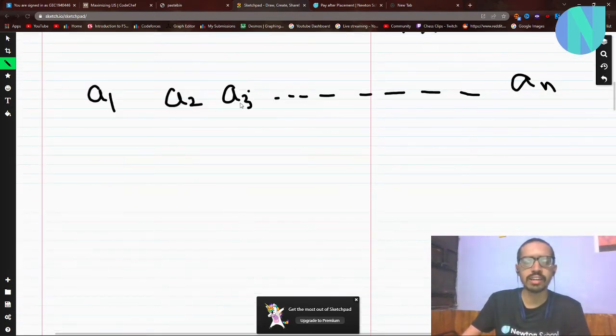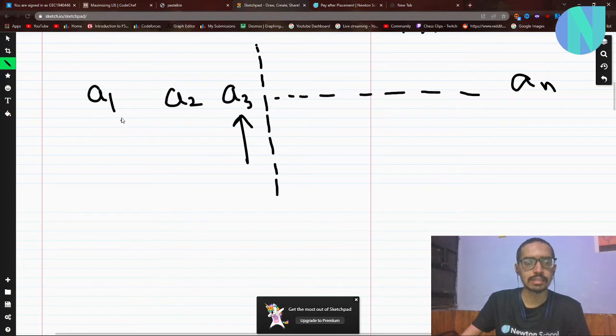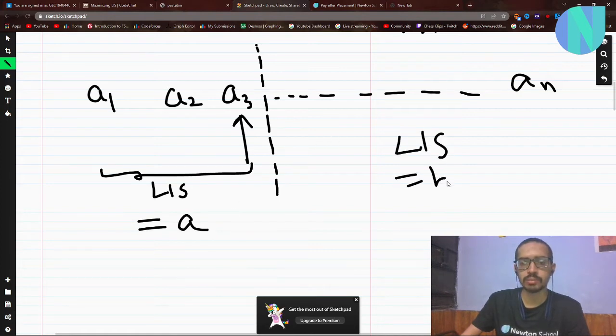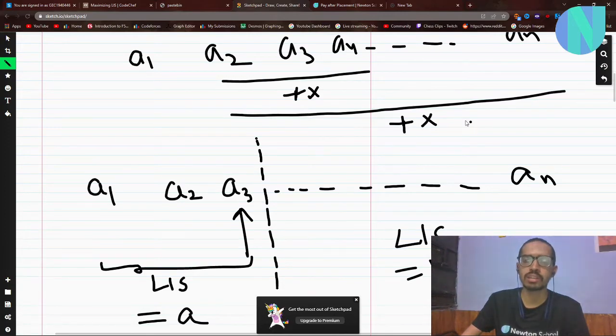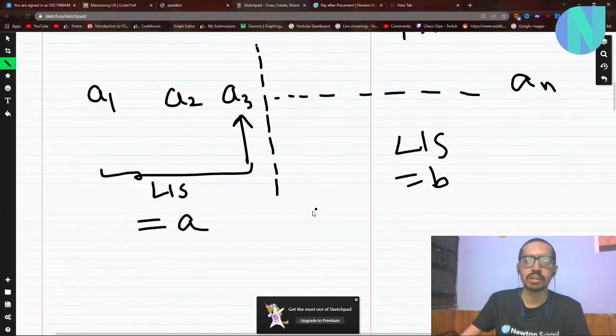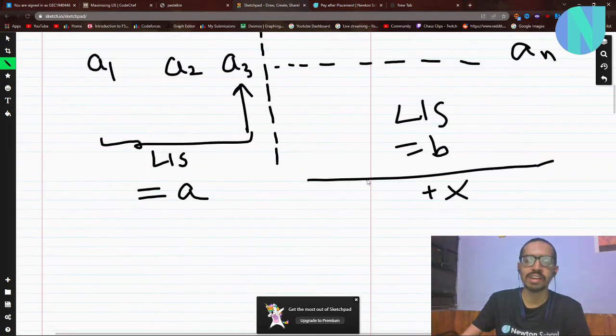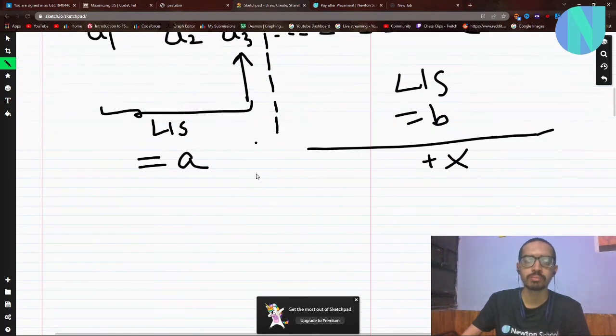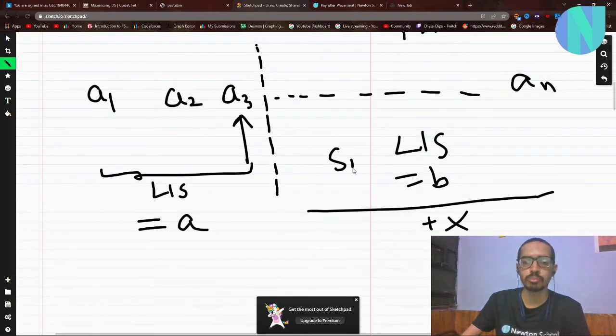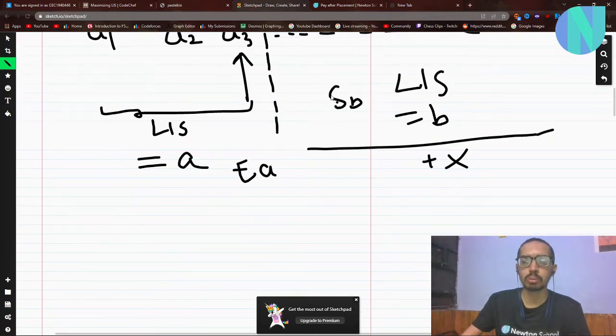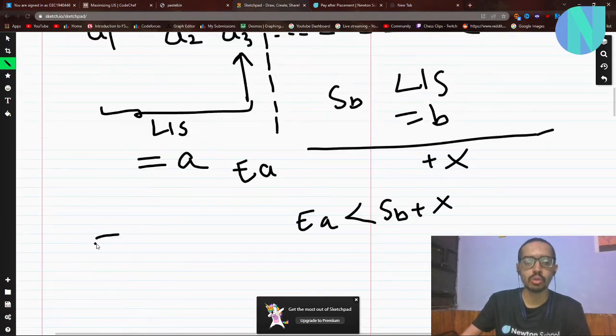What we can do is iterate over all the indices. We can break the array at some index. Let's say on the left half, LIS is of size a, and on the right half, LIS is of size b. We know it is always optimal to apply this operation on the entire suffix. Let's say the starting element of the suffix is sb and the ending element of the prefix is ea. We can always apply some operation x such that ea is less than sb plus x. So when we apply this operation, these two will get combined and my new maximum length will be a plus b.